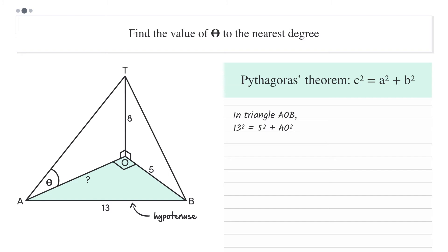Rearranging to get AO squared as the subject gives us AO squared equals 13 squared minus 5 squared. So AO squared equals 144. Taking the square root, we get AO equals positive or negative 12. Since AO is a distance and we can't have a negative distance, we just take AO equals positive 12 as our answer.